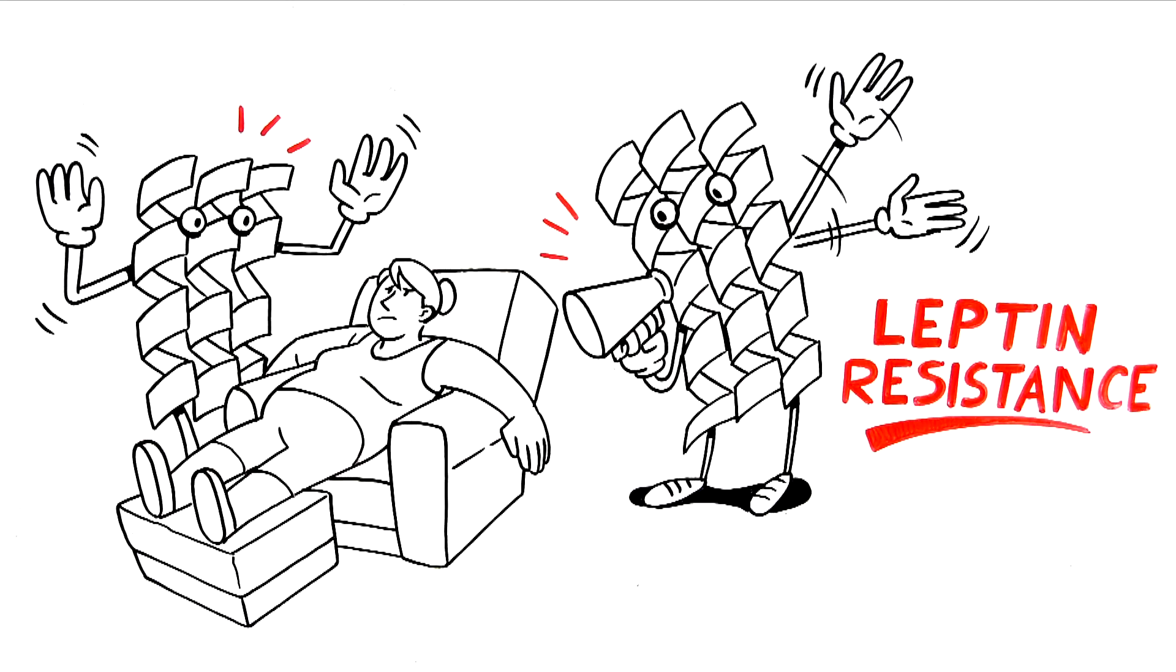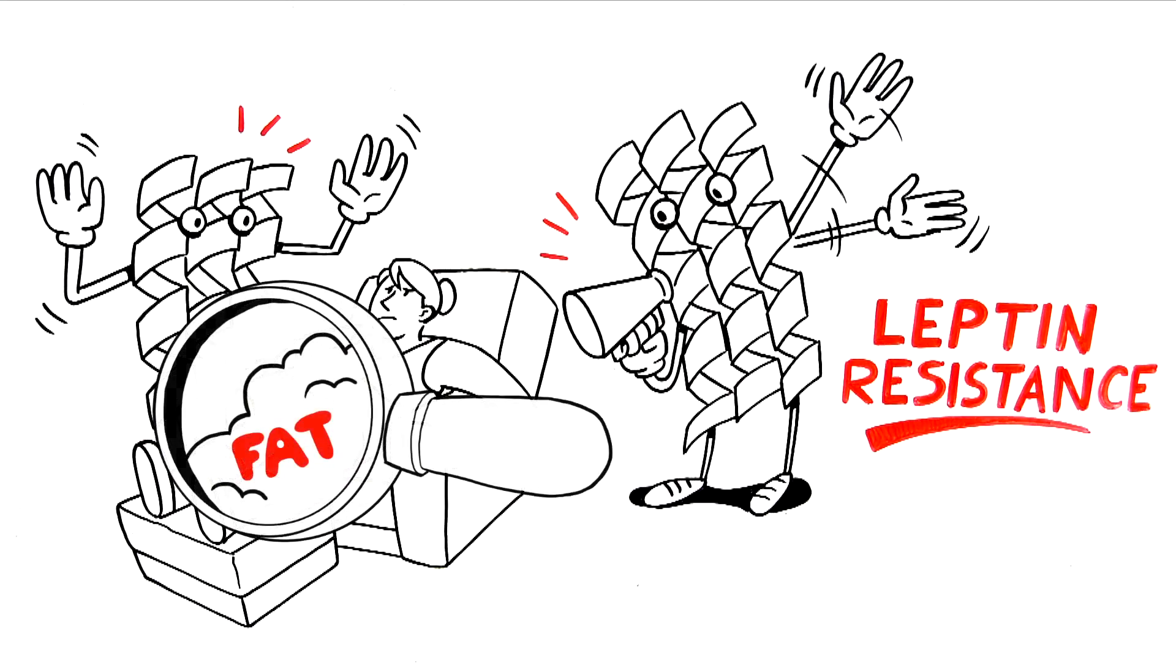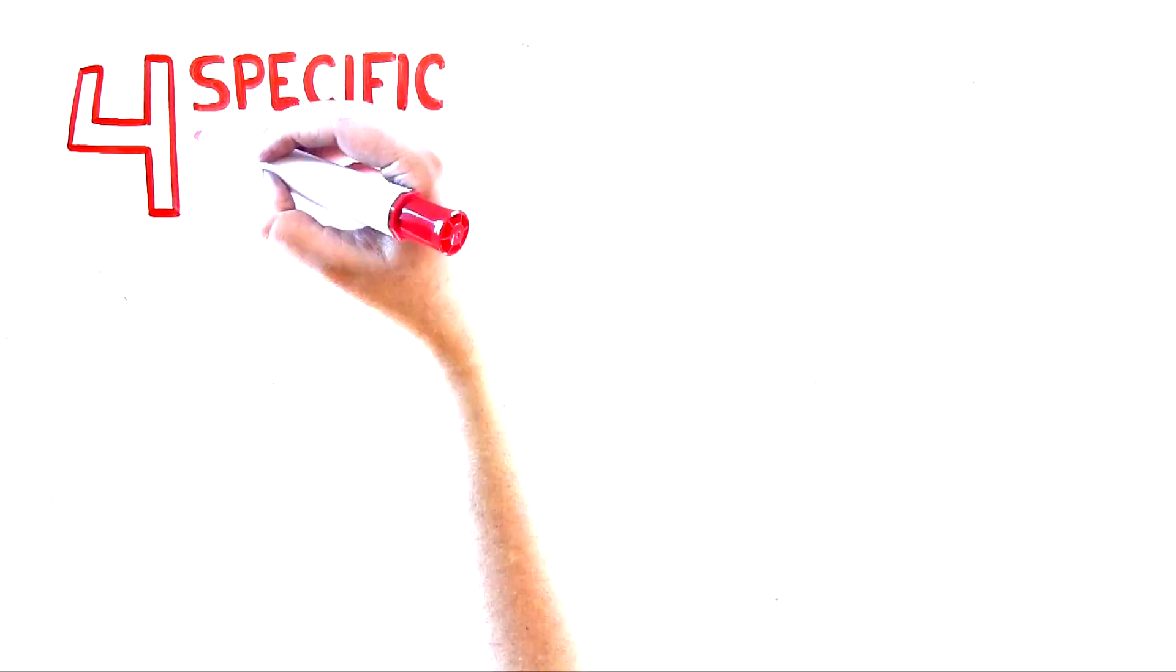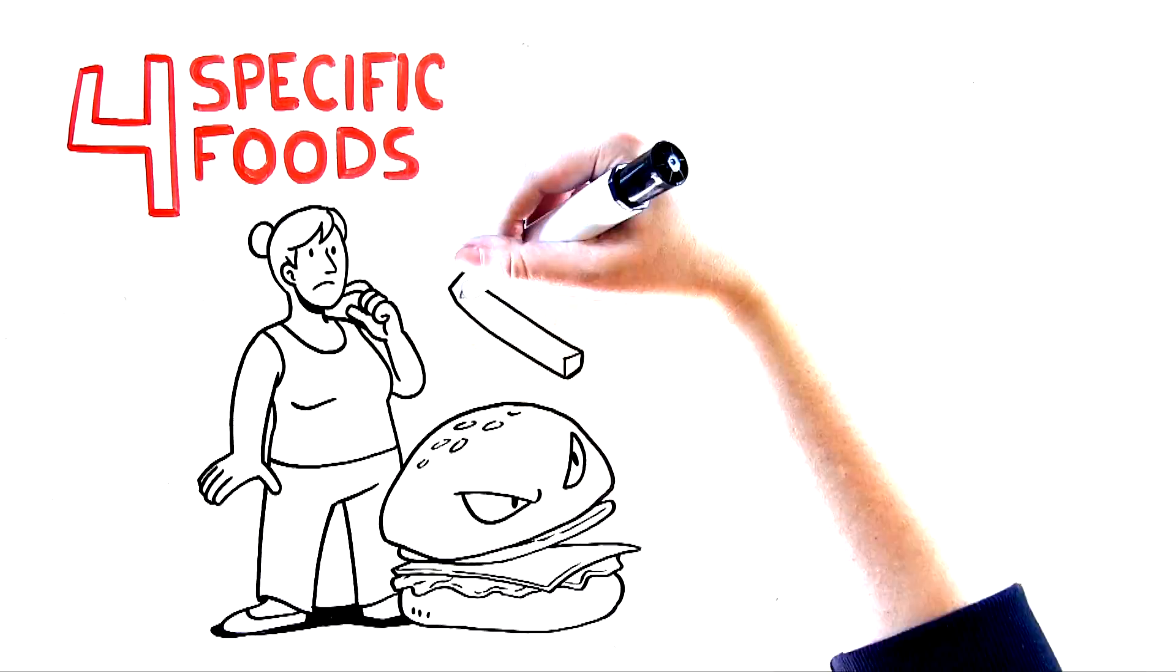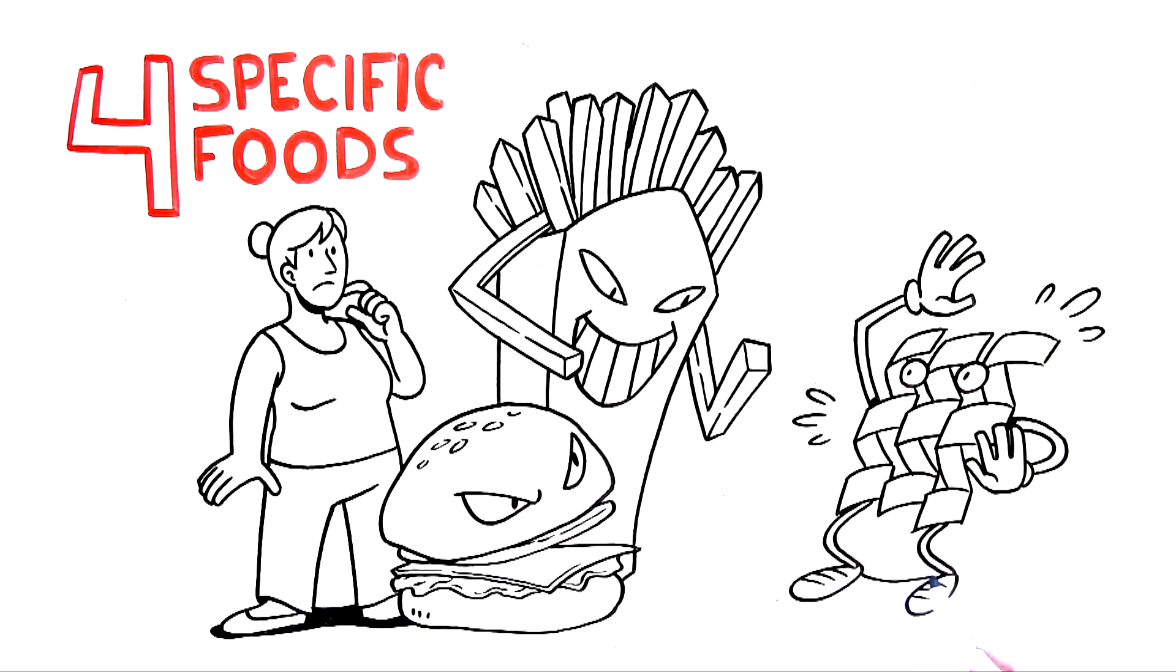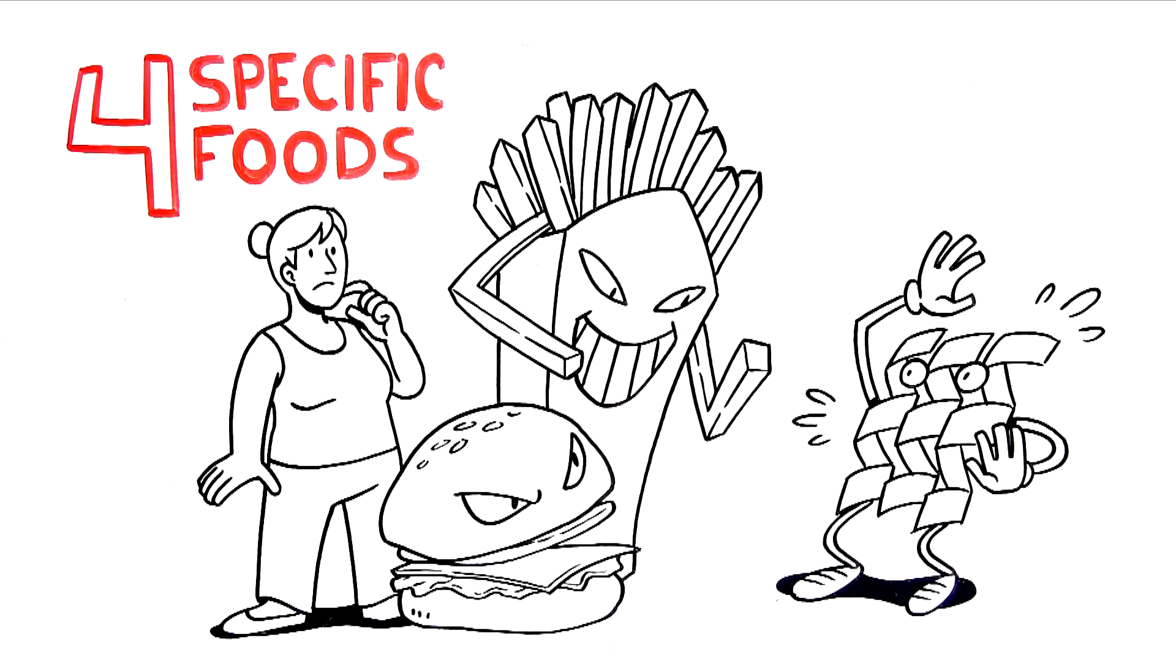An obvious sign of leptin resistance is the soft, squishy, cottage cheese-looking fat found in your problem areas. And there are four specific foods which make this common problem of leptin resistance, and the weight gain attached to it, much worse for women.